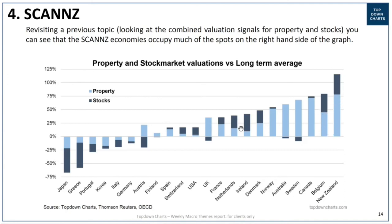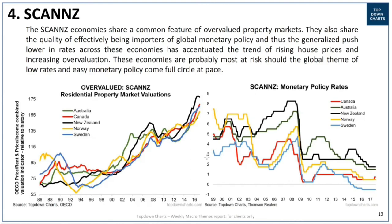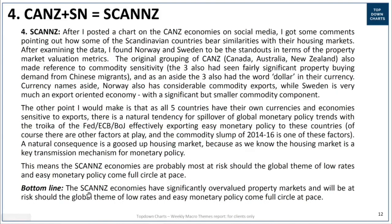New Zealand stands out in particular because you've got both an overvalued property market and an overvalued stock market — a similar situation to Belgium. Some other European countries down that end are comparable too. At the other end of the spectrum, the unsurprising suspects such as Japan, Greece, and Portugal are arguably structurally undervalued. Coming back to the bottom line: the SCANS economies have significantly overvalued property markets and will be at risk should the global theme of low rates and easy monetary policy come full circle at pace.